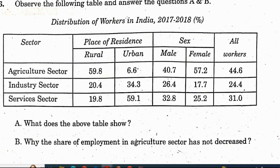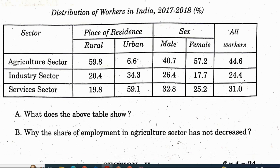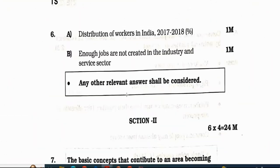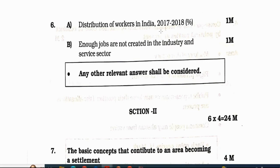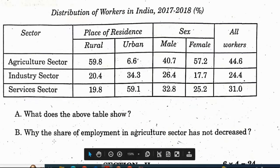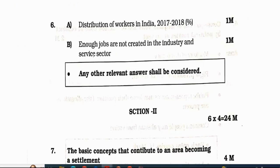Sixth question: observe the following table and answer questions A and B. Distribution of workers in India in 2017-18 — agriculture sector, industry sector, service sector, by place of residence, sex, and all workers. Sub-question A: what does the table show? Answer: distribution of workers in India in 2017-18 — 1 mark. Sub-question B: why has the share of employment in agriculture sector not decreased? Answer: enough jobs are not created in the industry and service sector. Any other relevant answer shall be considered. 2 points, 2 marks.